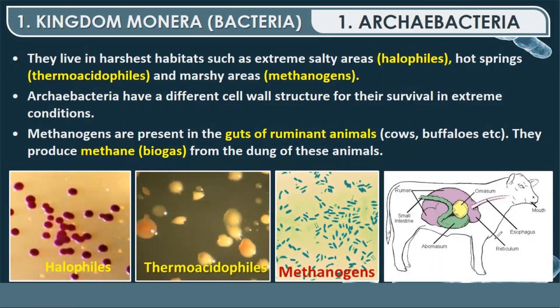Archaebacteria live in the harshest habitats such as extreme salt areas, hot springs, and marshy areas — that is why they are known as Extremophiles. They have a different cell wall structure for survival in extreme conditions. Methanogens are present in the guts of ruminant animals like cows and buffalo, and produce methane (biogas) from the dung of these animals. Cow dung is used in biogas plants for methane production.